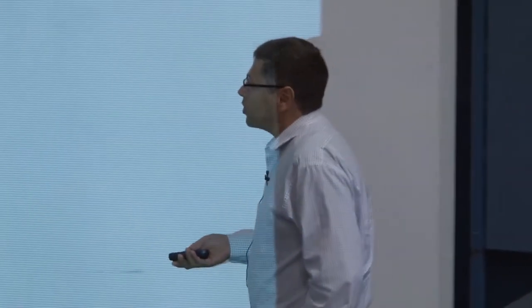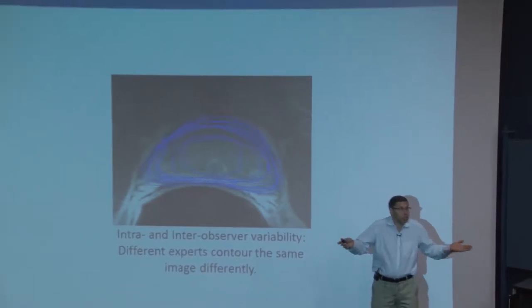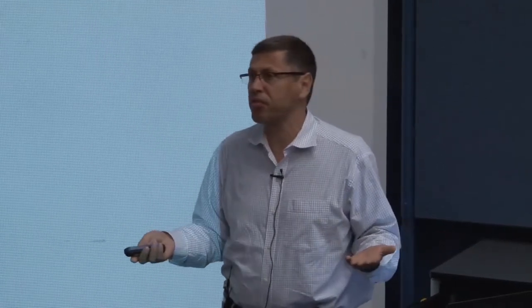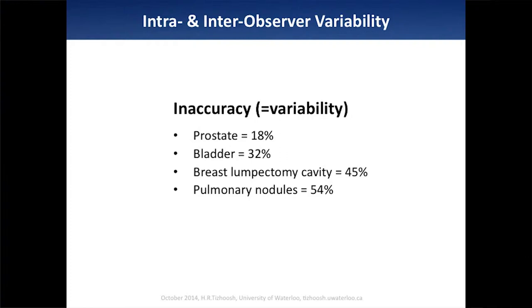One of the biggest problems in everyday clinical work is intra-observer variability. Take a prostate gland — a very simple task, not even a tumor. Give it to five doctors and ask them to contour it twice. Look how much difference there is. Nobody knows who is right. If this is for treatment, that's one of the reasons 15,000 people die in the US because of CT overdose. The numbers: prostate contouring shows up to 18% difference between experts, bladder 32%, and up to 54% for something as critical as lung.